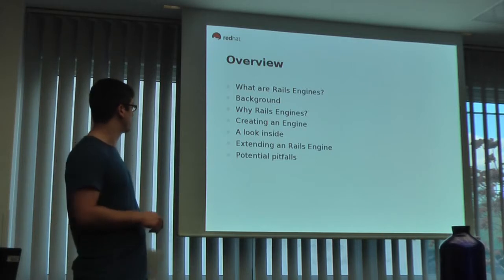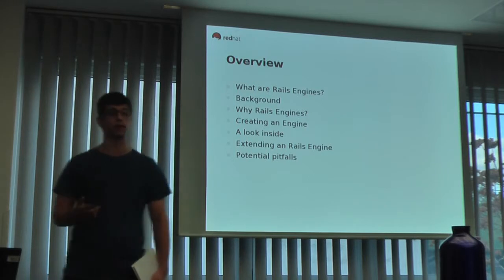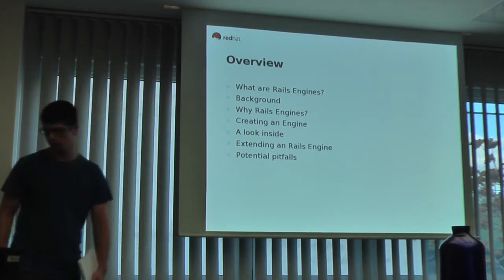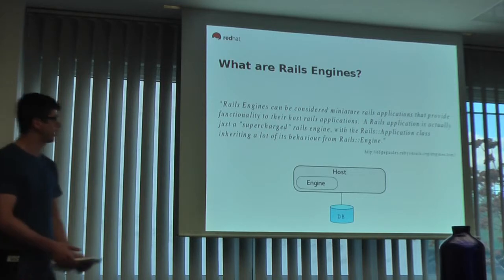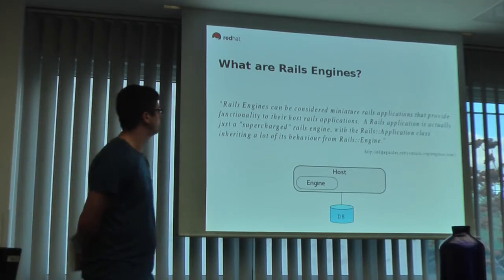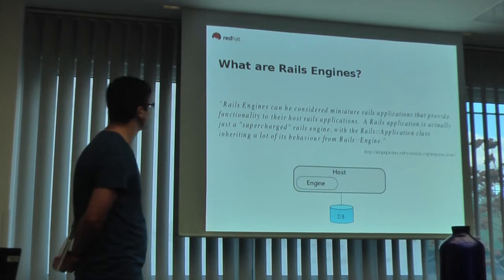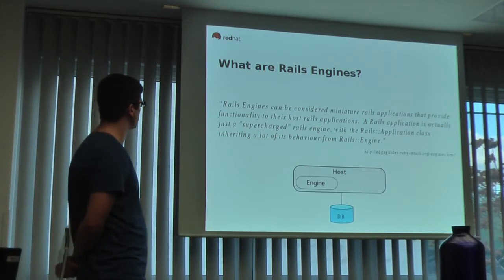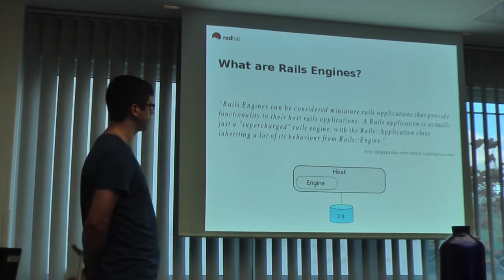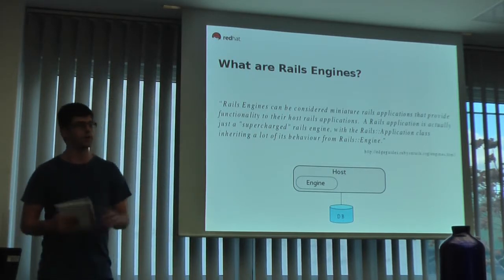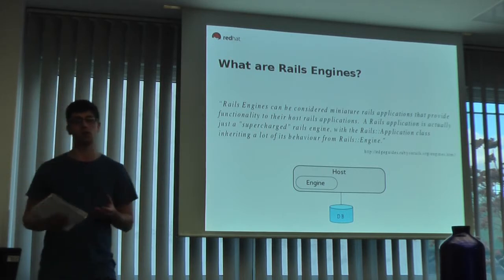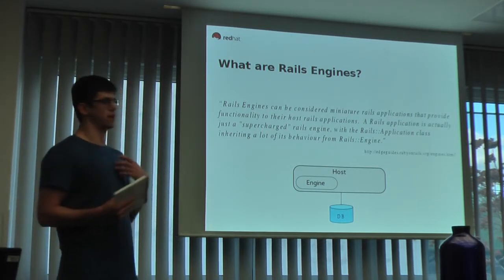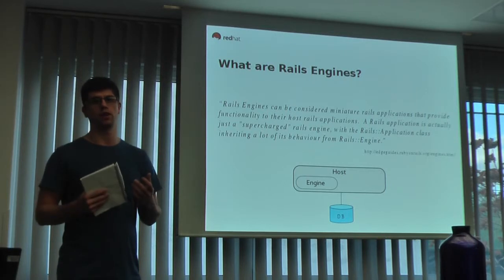We'll also look at inside host applications and some of the potential pitfalls that Wade came across when creating TIM. So, taken from the Edge guide: Rails engines can be considered miniature Rails applications that provide functionality to their host Rails applications. A Rails application is actually just a supercharged Rails engine, with a Rails application class inheriting a lot of its behaviour from Rails engine. Essentially, a Rails engine is very similar to a Rails application itself — a Rails application is a superset on top of a Rails engine.